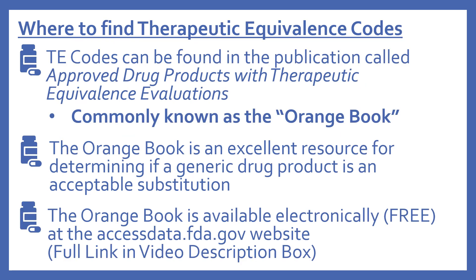Now we'll talk about where to find therapeutic equivalence codes. The TE codes can be found in the publication called Approved Drug Products with Therapeutic Equivalence Evaluations, commonly known as the Orange Book. The Orange Book is an excellent resource for determining if a generic drug product is an acceptable substitution, and it's available electronically for free at the accessdata.fda.gov website. I'll put the full link in the video description box.